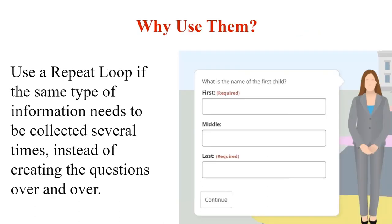A repeat loop is basically a series of questions that are going to display to the end user multiple times based on the user's input. You use repeat loops if you're trying to gather the same type of information multiple times from the end user. It saves you, the author, from having to create multiple versions of the same question over and over again, and it allows either a defined or a potentially infinite number of repetitions depending on how many the user needs.